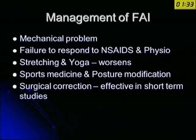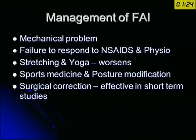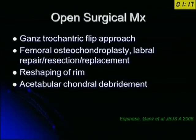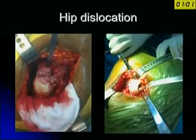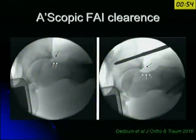For management of femoroacetabular impingement, we have to address the mechanical problems. In conservative treatment, physiotherapy, stretching, or yoga exercises classically make their pain worse. One option is surgical correction. The open surgical technique described by the Gantz group involves dislocating the head, reshaping the rim, and then reducing it — in their hands there was no avascular necrosis and results were satisfying. However, the chances of avascular necrosis are quite high with open surgery. If you are an experienced arthroscopic surgeon, arthroscopic clearance of the cam mechanism is extremely useful.